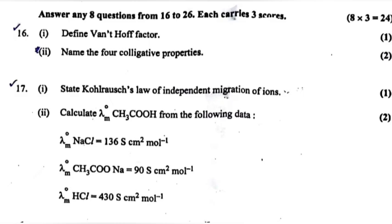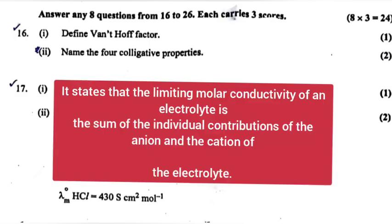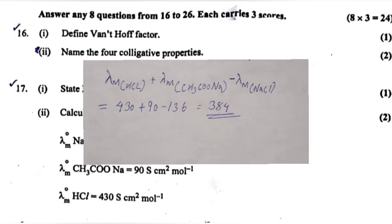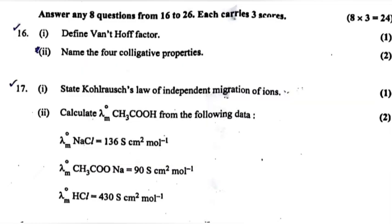Question 17, Part 1: State Kohlrausch's law of independent migration of ions. Answer: It states that the limiting molar conductivity of an electrolyte is the sum of the individual contributions of the anion and cation of the electrolyte. Part 2: Calculate limiting molar conductivity of CH3COOH. Answer: Molar conductivity of HCl plus molar conductivity of CH3COONa minus molar conductivity of NaCl equals 430 plus 90 minus 136, which equals 384.